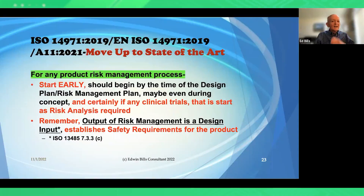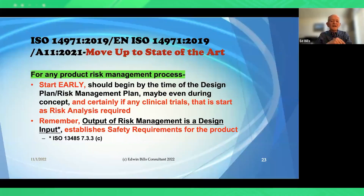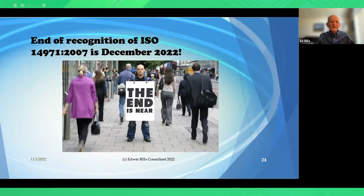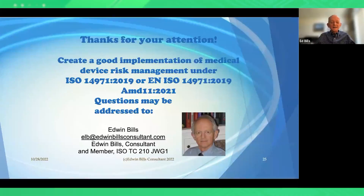For any risk management process, you should start early — by the time of design plan creation, maybe even during concept development, and certainly during clinical trials since clinical trials require risk analysis. The output of risk management is design input. The end of recognition of ISO 14971-2007 is December 2022. Scrub all documentation and remove any references to earlier editions. You should have either the ISO 2019 or the EN 2019 version — the EN version needs to include Amendment 11 from 2021.